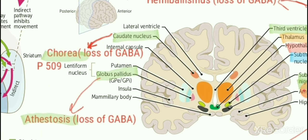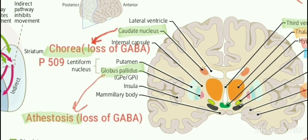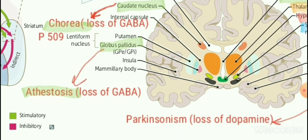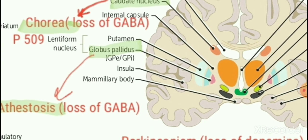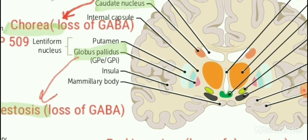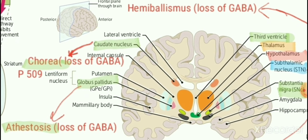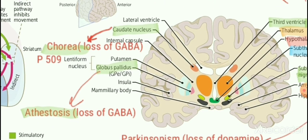The same loss of GABA takes place in two other diseases. One is Chorea — Chorea is loss of GABA in the caudate nucleus, which is also given on page 509 about Chorea and athetosis. Athetosis is also loss of GABA but in globus pallidus. Globus pallidus with putamen forms the lentiform nucleus, which is present lateral to the thalamus. For hemibalismus, the related nucleus is subthalamic; for Chorea it is caudate; and for athetosis it is globus pallidus.